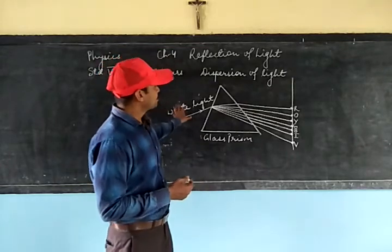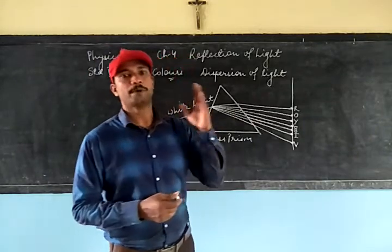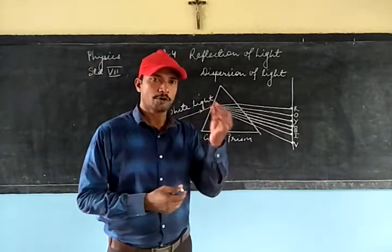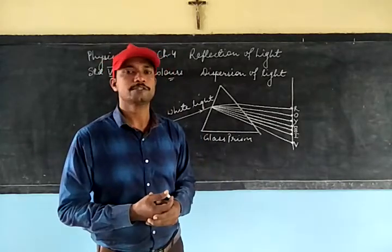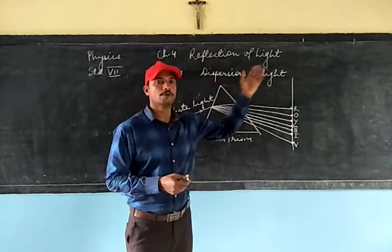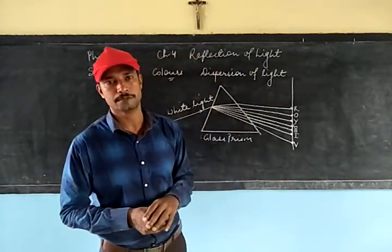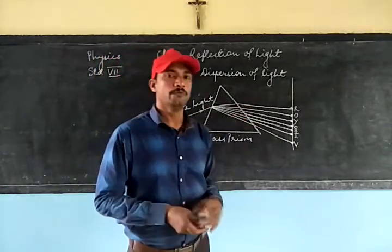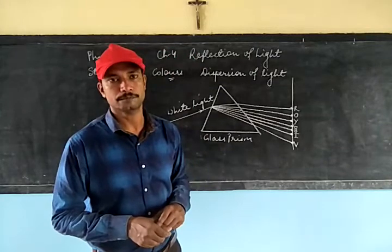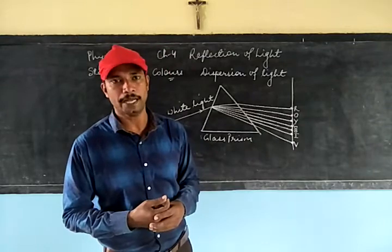So this splitting of white light when it passes through a glass prism or drops of water is called dispersion of light. Dispersion of light is nothing but the splitting of white light into seven different colors. This phenomenon of splitting is called dispersion of light.